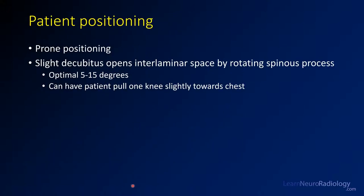When positioning the patient, some people choose straight prone, but in that position the spinous process can be a little more in the way. I prefer to rotate the patient about 5 to 15 degrees. If you have the patient pull one knee slightly toward their chest, that puts a little tilt in the spine, which rotates the spinous process to one side and gets it out of the way.